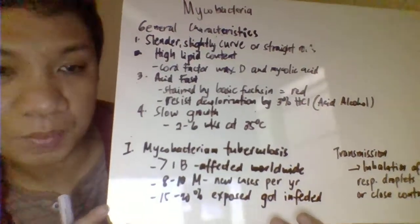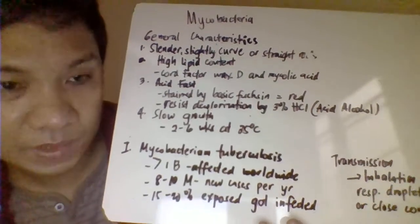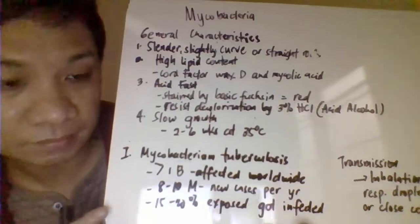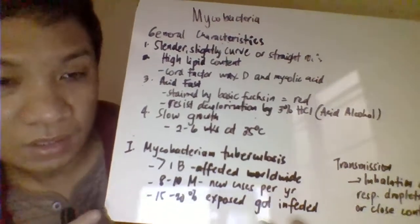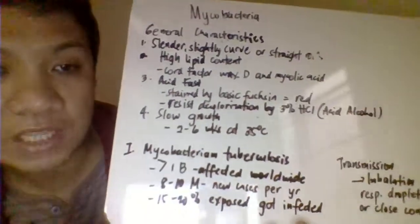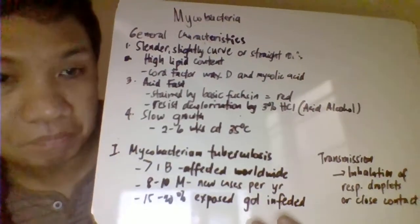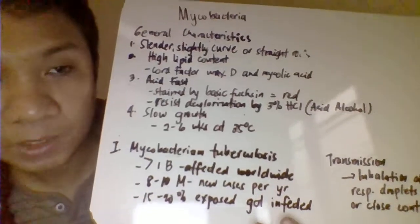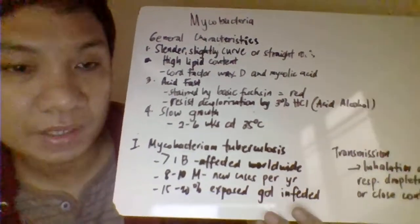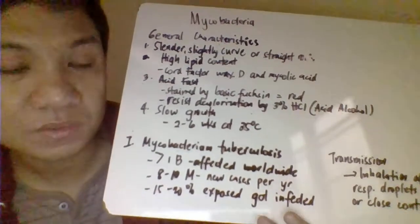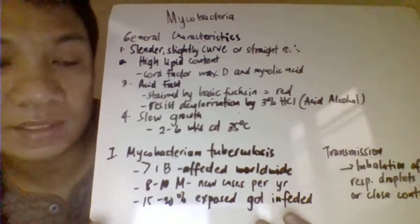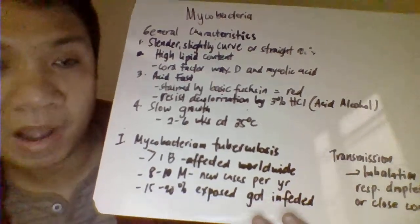Mycobacterium tuberculosis is the causative agent of tuberculosis. Approximately more than 1 billion of the population has been infected worldwide, with approximately 8 to 10 million new cases every year. Of those exposed, only 15 to 20% actually develop disease, depending on the immune system, the amount of inoculum, and the virulence of the strain.